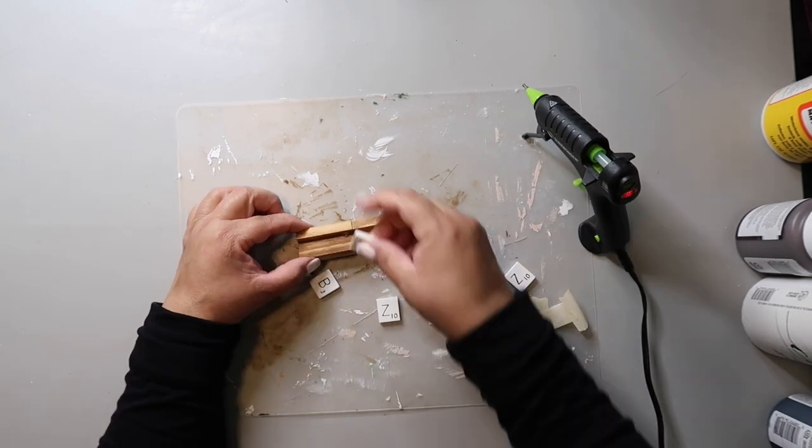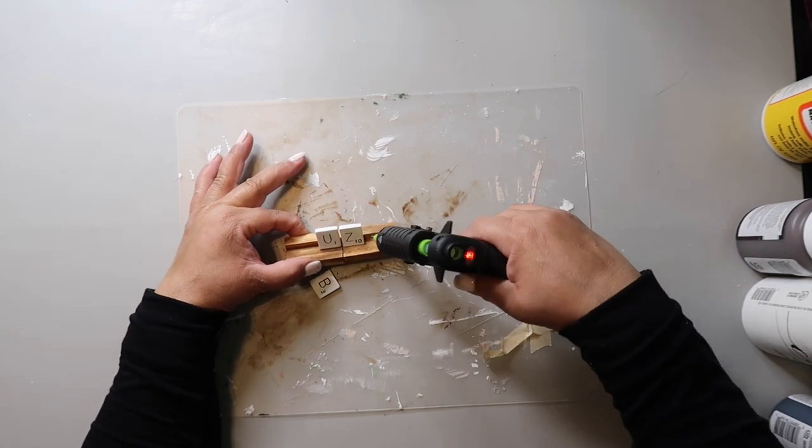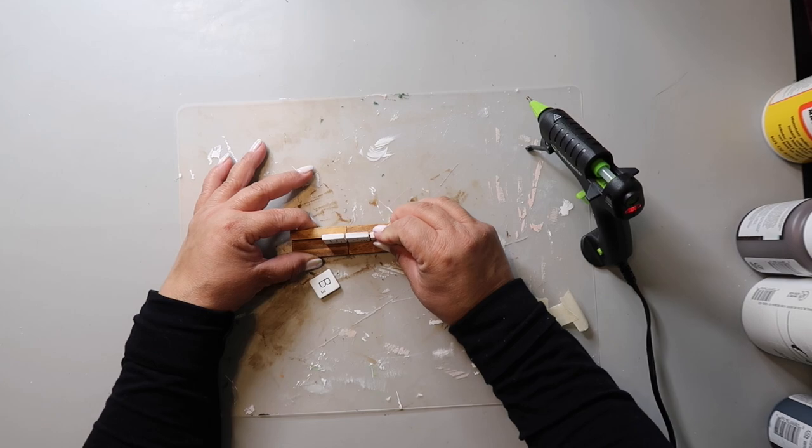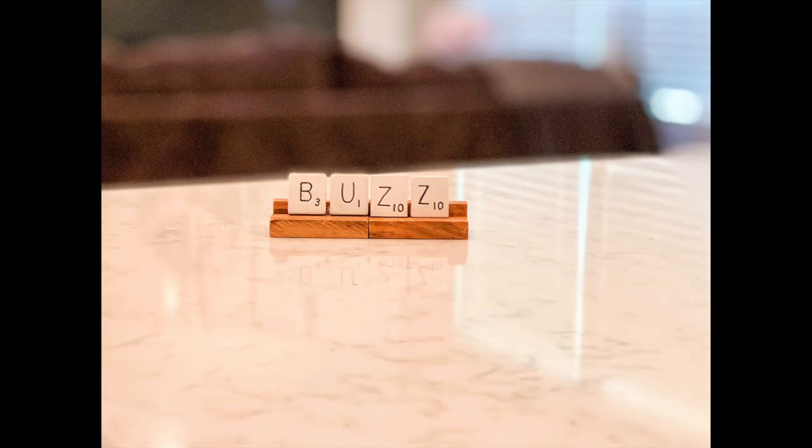Next, you just glue on the letter tiles to the holder and I start in the center to make sure everything lines up. And this is how my little buzz sign turned out. Super cute and super easy to make.